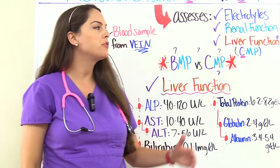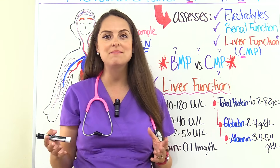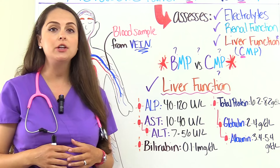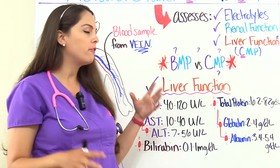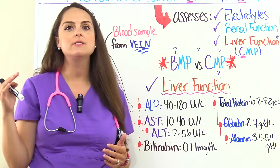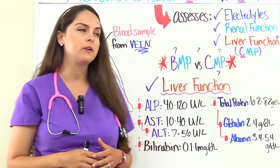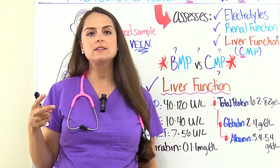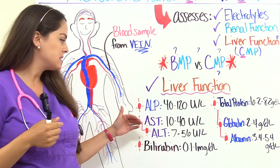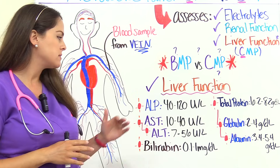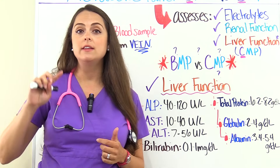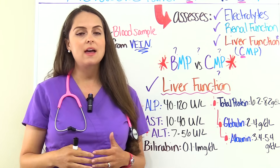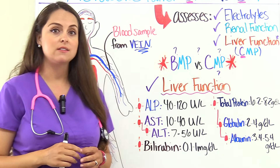Now let's talk about the liver function that the metabolic panel — specifically the comprehensive metabolic panel — assesses. It's going to look at ALP, an enzyme found in bones and liver. A normal ALP is about 40 to 120 international units per liter, and high results could indicate liver or bone disease. It also looks at AST and ALT — these two enzymes go together to tell us how well the liver is working. AST is an enzyme found in the heart and liver, with a normal level of about 10 to 40. ALT is an enzyme found in the liver and kidneys, with a normal level of about 7 to 56. High levels of either could indicate liver issues that need further investigation.